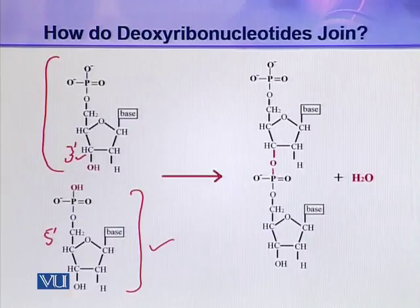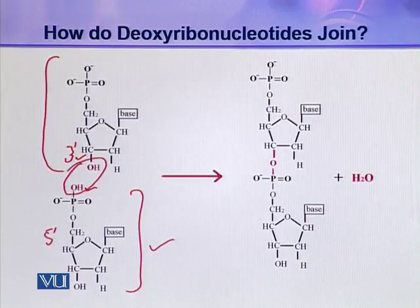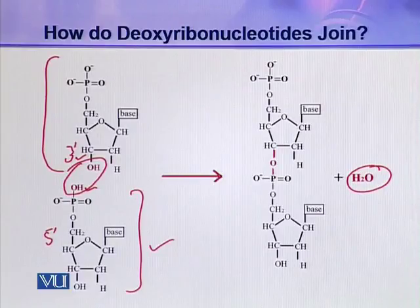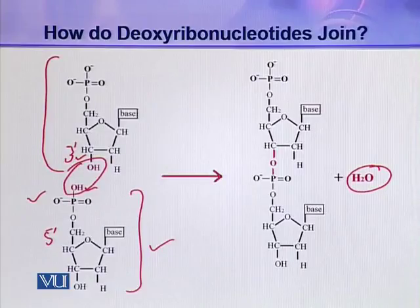Similarly, another hydroxyl group is present on this phosphoric acid. So these two hydroxyl groups combine together, a water molecule is eliminated, and an ester linkage is established. This is an ester linkage because this is an organic acid and this is an alcoholic group, and when an organic acid and an alcoholic group react, they form an ester linkage.